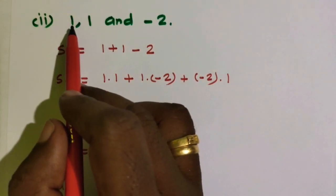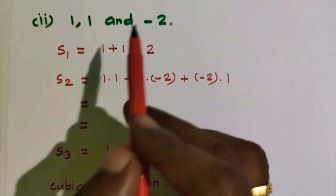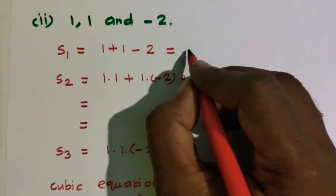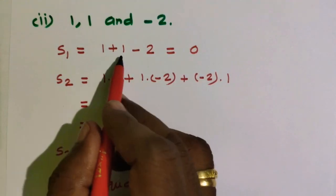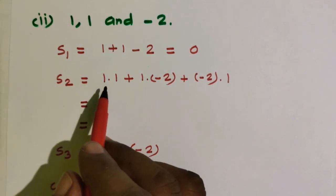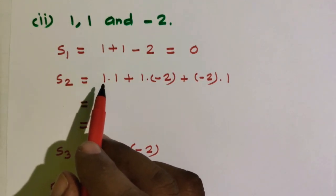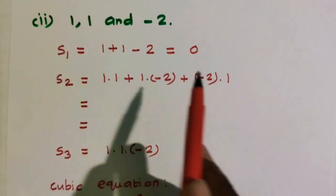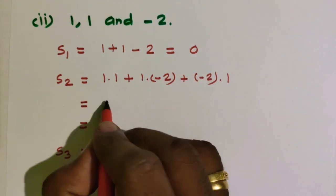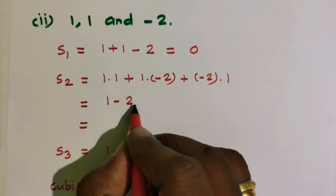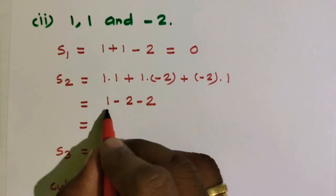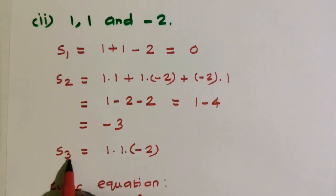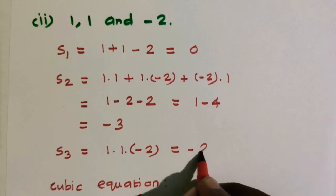Subdivision 2: roots are 1, 1, and minus 2. So s1 equals sum of the roots: 1 plus 1 plus minus 2, which is equal to 0. And s2 equals sum of the products taken two at a time: 1 into 1 plus 1 into minus 2 plus minus 2 into 1, giving 1 minus 2 minus 2, so 1 minus 4, which equals minus 3.